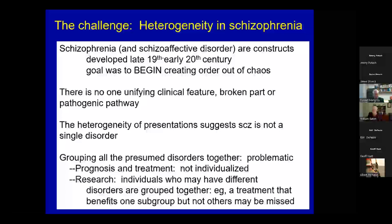We are left with clinical syndromes, but clinical syndromes that are quite different. And the problem is, if this disorder is really many disorders, we have difficulty making prognosis and treatment because that prognosis and treatment is not individualized in any way. Individuals may be radically different, and it causes trouble with research. If you group people with different disorders and ask who responds to a medicine, you are likely to lose your signal in the noise — a treatment that benefits one subgroup but not others may be missed.